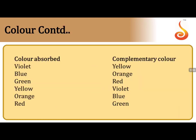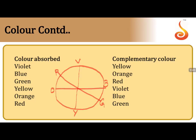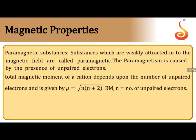Complementary colors are important here. The color wheel gives the answers: violet corresponds to yellow as complementary color; blue corresponds to orange; red corresponds to green; yellow corresponds to violet; orange corresponds to blue; and green corresponds to red. Remembering this color wheel will help you answer examination questions easily.